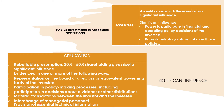Next, we have interchange of managerial personnel. Companies may interchange managerial personnel between the investor and investee — if there is such interchange, that indicates significant influence. Finally, we have provision of essential technical information. If there exists provision of essential technical information between investor and investee, significant influence is present.